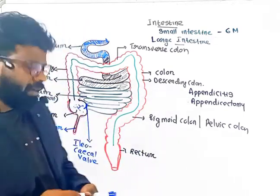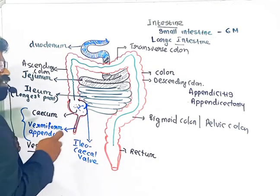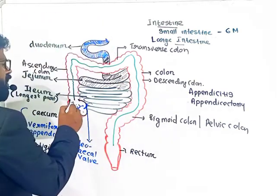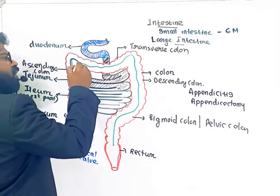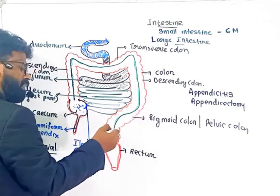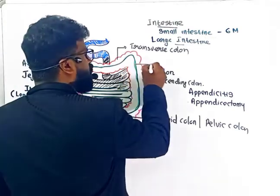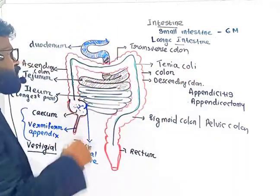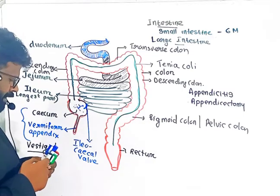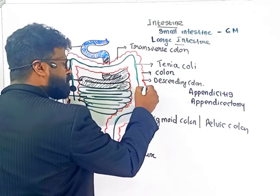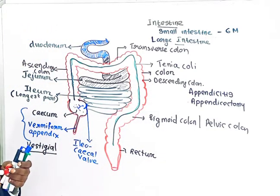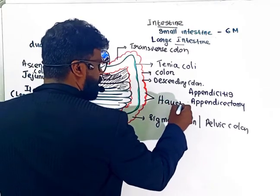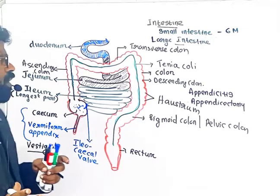Along the entire length of the colon, a longitudinal muscle runs through the wall, called the taeniae coli. Additionally, pouch-like structures are seen on the wall of the colon; these pouches are called haustra.